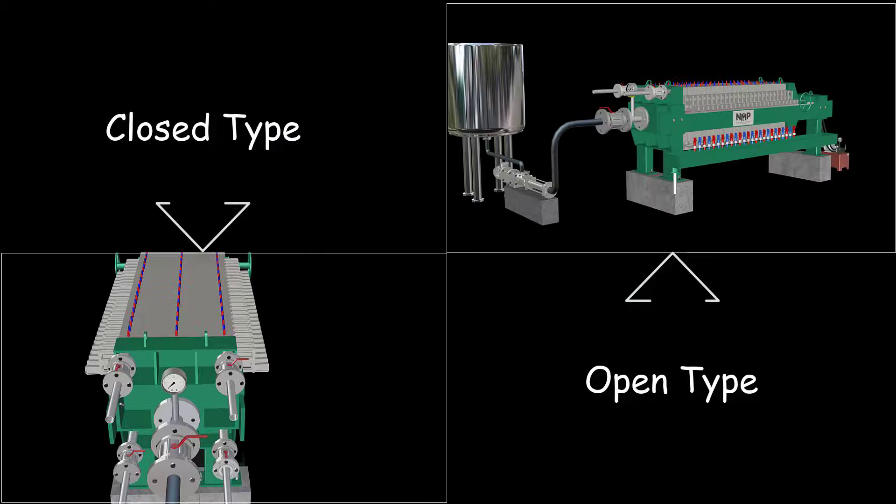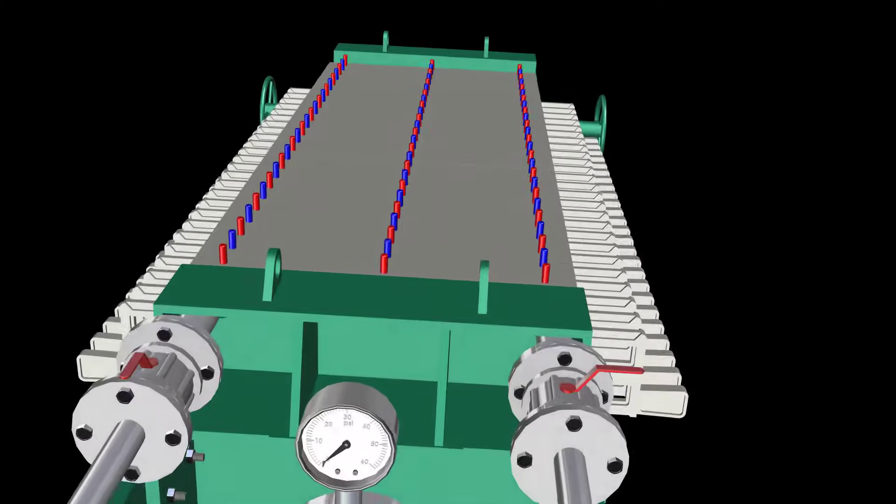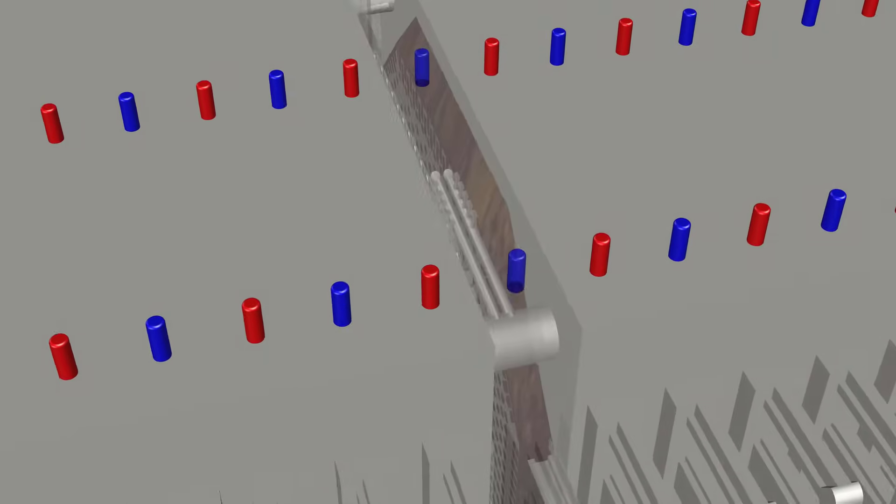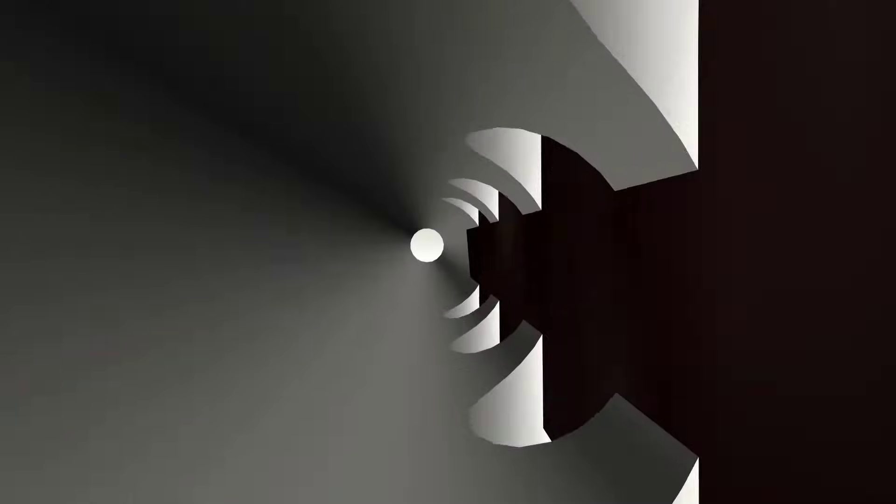There are two options available: one is open discharge and close discharge. In close type of delivery, there are small holes in each plate to drain out the slurry liquid. These holes are located in the bottom of the plates.